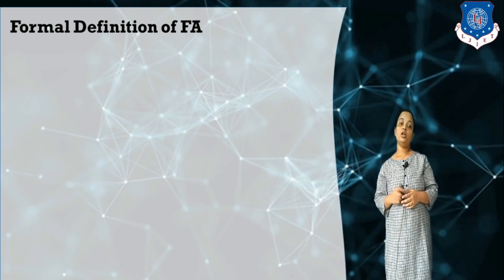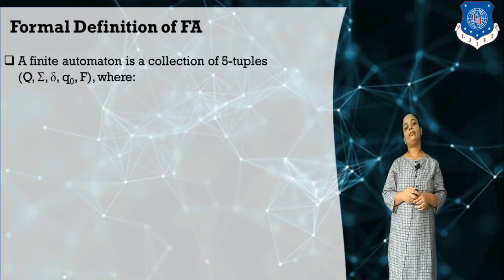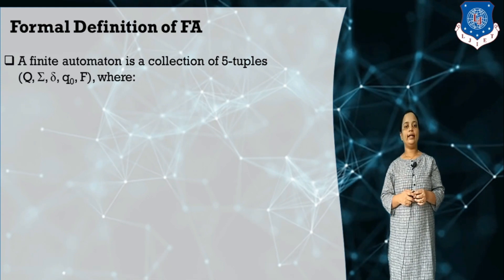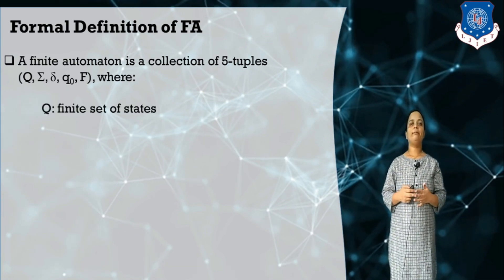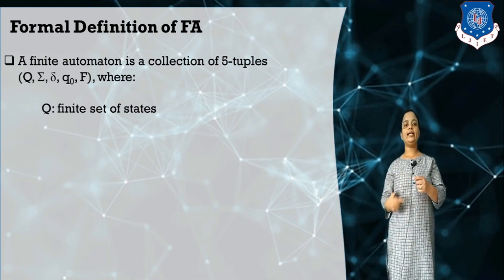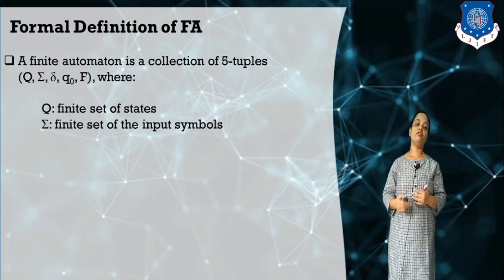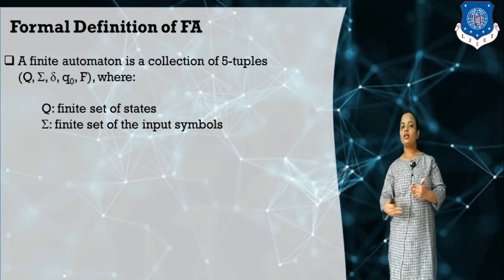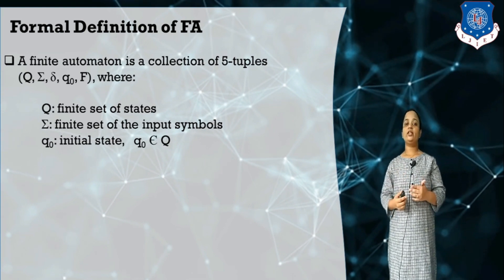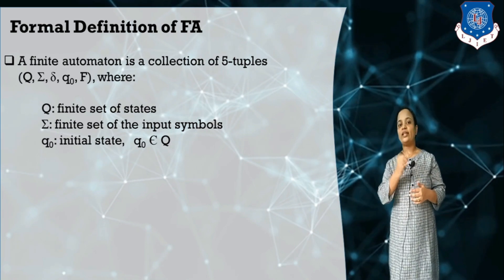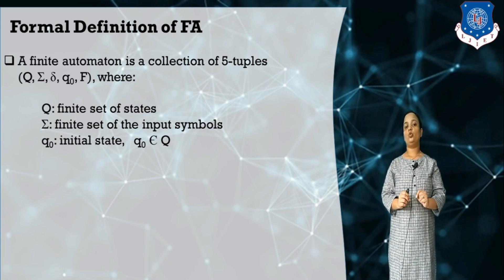Now, what is the formal definition of finite automata? A finite automata is defined by the five-tuple: Q, sigma, delta, Q0, and F. Q represents the finite set of states. Sigma contains the input symbols — the kind of symbols the string contains. Q0 is the initial state — the state where we start processing the input symbol and move to another state or stay in the same state. Q0 always belongs to the set Q.